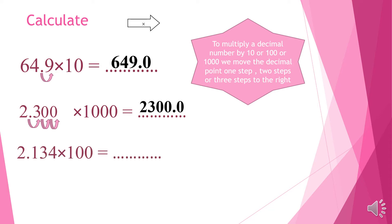Let's continue. We have 2.134 times 100. I will move the point how many steps? Two steps — excellent — because we have 100. And to the right or to the left? To the right side. Excellent. Let's move it to the right side two steps: one, two. It will be here. We get 213.4.